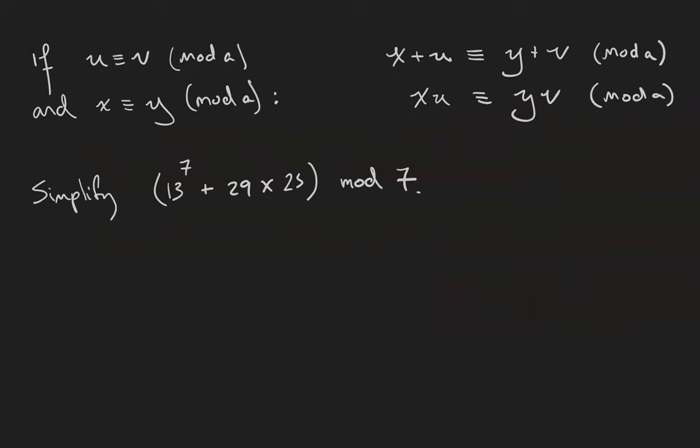Here's a very cool application of this relation. Suppose that u and v are equivalent, and so are x and y. It turns out that this equivalence carries through the algebraic operations. x plus u is equivalent to y plus v, and x times u is equivalent to y times v. That allows us to simplify some very complicated looking computations modulo an integer.